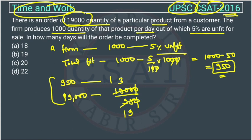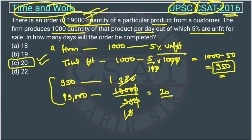Simplifying: 5 into 15 gives 3, and then you can cut 19 into 38 to get 2, giving us 20. So they will produce 19,000 units in 20 days. The answer is Option C. This was a very easy CSAT paper question.